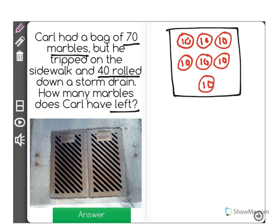Now when he trips, 40 marbles roll down the storm drain. So we have to visualize that he no longer has those marbles. So when those marbles are gone, we are going to do this by getting rid of 40.